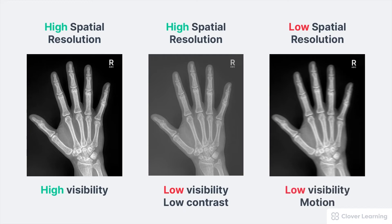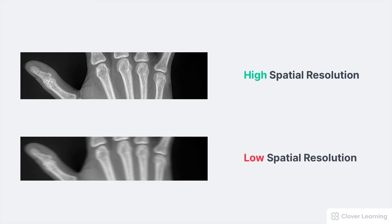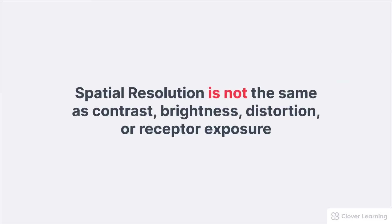And of course, if the recorded spatial resolution is poor, then the visibility of structural sharpness is also poor. Here's another way to think of spatial resolution — it's the ability to see very small parts or very small spaces between parts in a radiographic image. In this first image of a magnified hand, the very tiny trabecular markings in the bones are sharp and clearly seen. In the second image, the small trabecular markings are blurred and not so easy to see. The brightness and contrast are the same, but the spatial resolution is different.